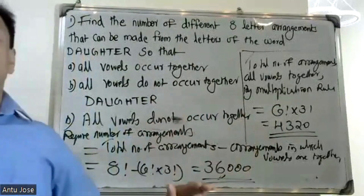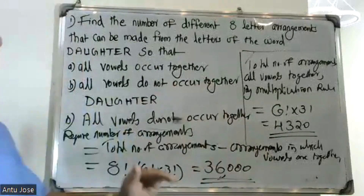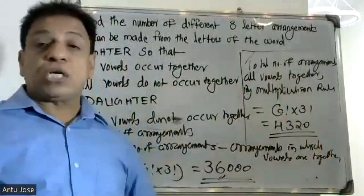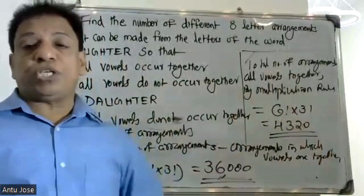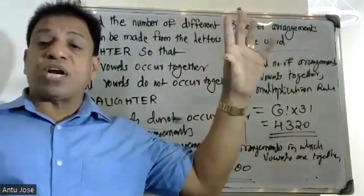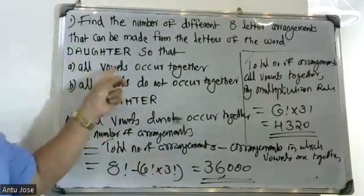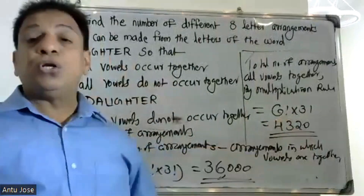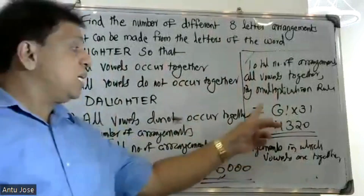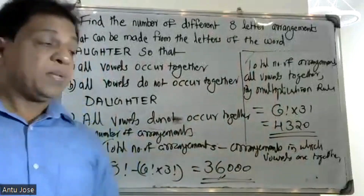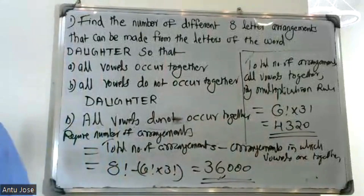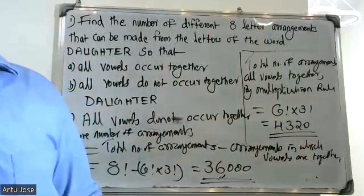Using the multiplication rule: 6 factorial times 3 factorial equals 4,320. Total arrangements is 8 factorial equals 40,320. Therefore arrangements where vowels do not occur together equals 8 factorial minus 6 factorial times 3 factorial, which is 40,320 minus 4,320 equals 36,000.